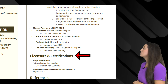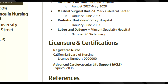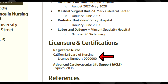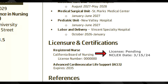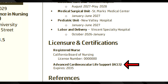Next we have licensure and certifications. In this section, make sure that you show your license to practice in the state that you're applying to, and make sure that your license number is easily visible. If you're a new grad and not yet licensed, you can list your licensure as pending while you're taking the NCLEX exam. In addition to licensure, add any certifications that pertain to the job. Many applicants like to include basic or advanced life support certifications like BLS, ACLS, or PALS.